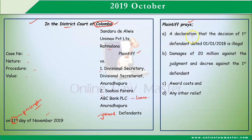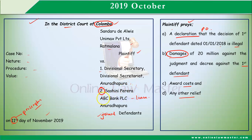Under the prayers, they are asking for a declaration that the decision of the first defendant on a particular date is illegal. They also claim damages against the first defendant and ask for costs and any other reliefs. Importantly, there is no prayer or relief claimed from the second defendant.